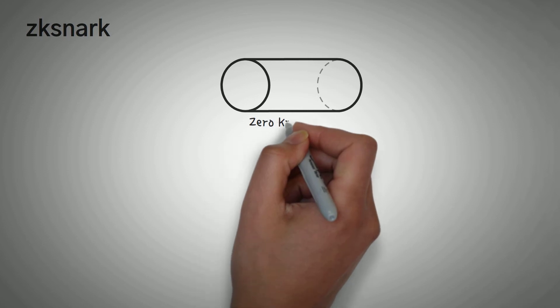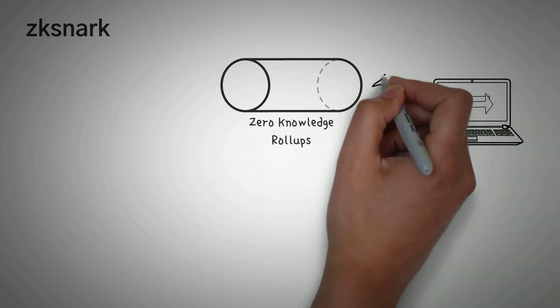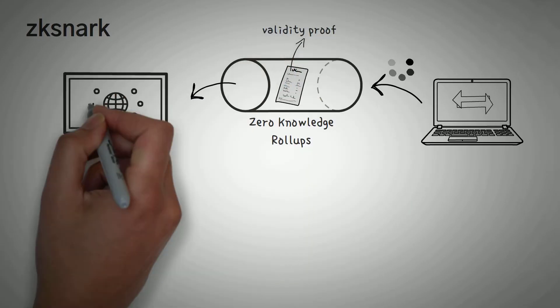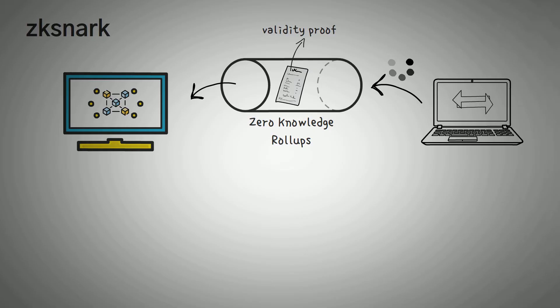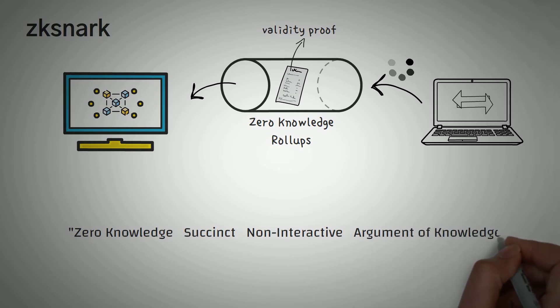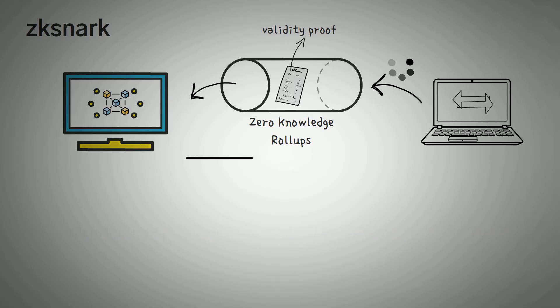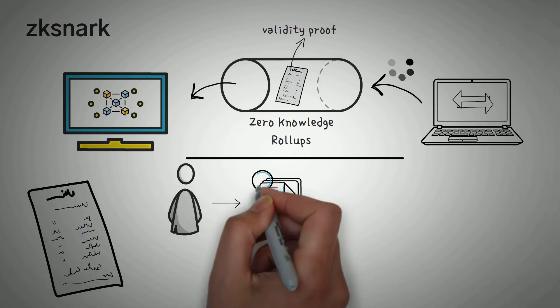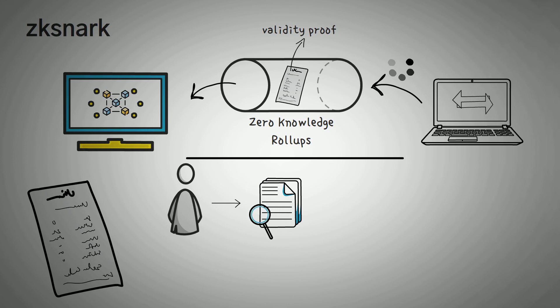First up, we have ZK snarks. ZK snark rollups, also called zero knowledge rollups, run a computation off-chain and then submit that computation as what is called a validity proof to the layer 1 blockchain. ZK snarks actually stand for zero knowledge, succinct, non-interactive argument of knowledge. Let's break it down. Validity proof basically means someone went through all the transactions in a specific rollup, did some work which is actually very similar to how proof of work works, and then found out that they were safe and not fraudulent.